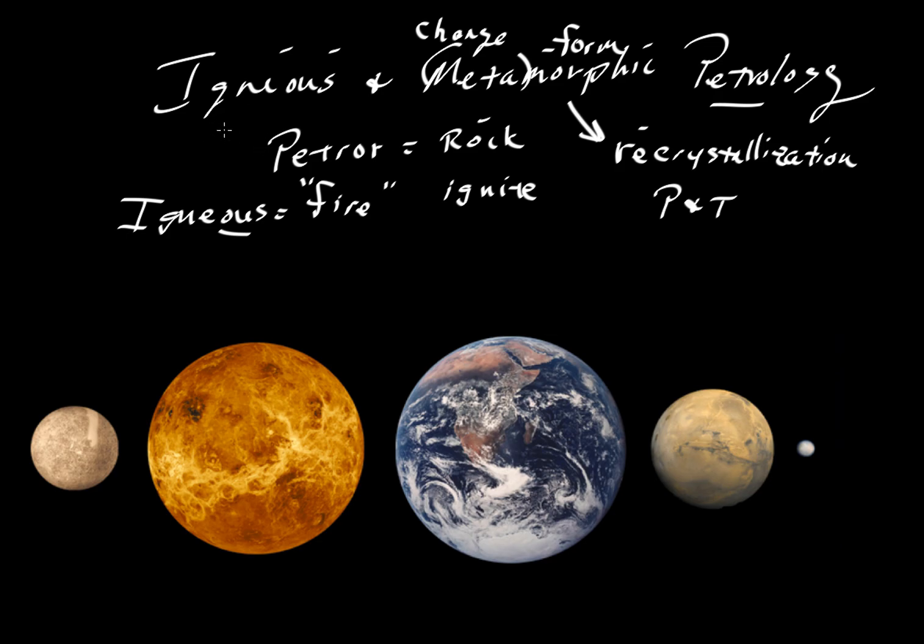Now notice one class of rocks is absent from here. We're not going to spend a lot of time talking about sedimentary rocks. So what is it about sediments that makes them especially different from igneous and metamorphic rocks?